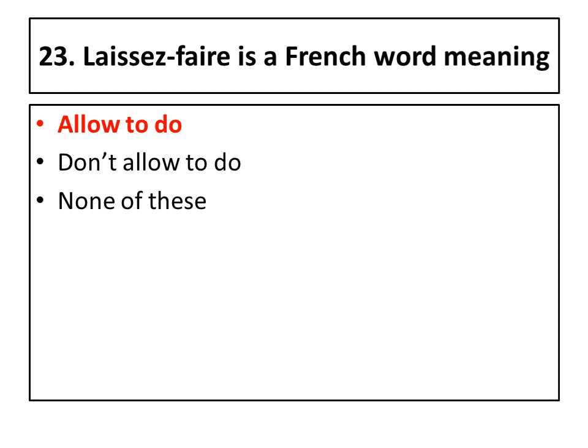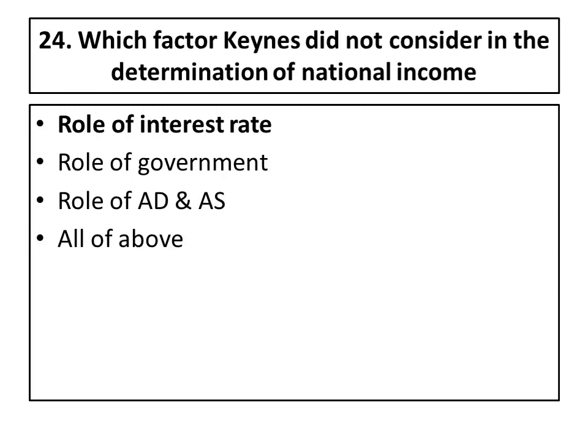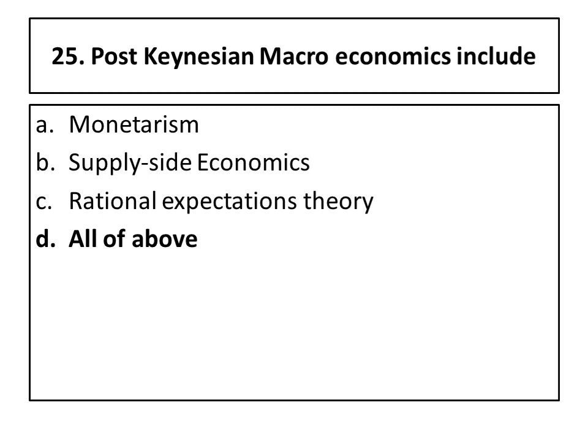Twenty-fourth question: which factor did Keynes not consider in determining national income? The answer is the role of the interest rate — Keynes did not consider it, which in a later case Hicks did. Hicks and Hansen together presented the IS-LM model when Keynes had not incorporated it.